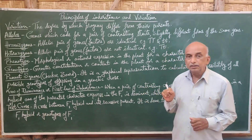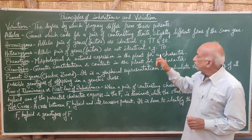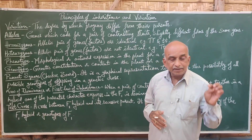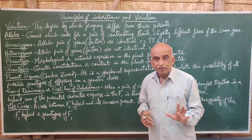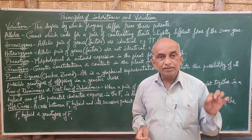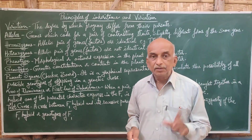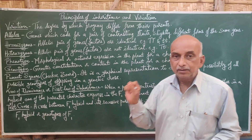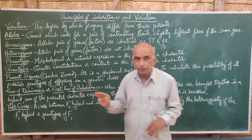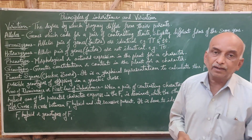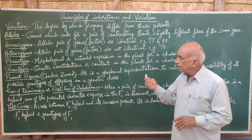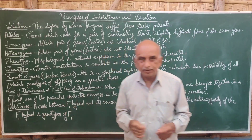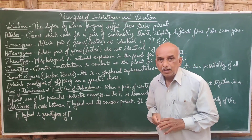Genotype means the actual genetic content inside the plant or organism. For example, a plant with capital T and small t is a tall plant phenotypically, but genotypically it carries both tall (T) and dwarf (t) factors. So capital T small t is phenotypically tall but genotypically tall and dwarf — that is the genetic constitution or innate character of the organism.